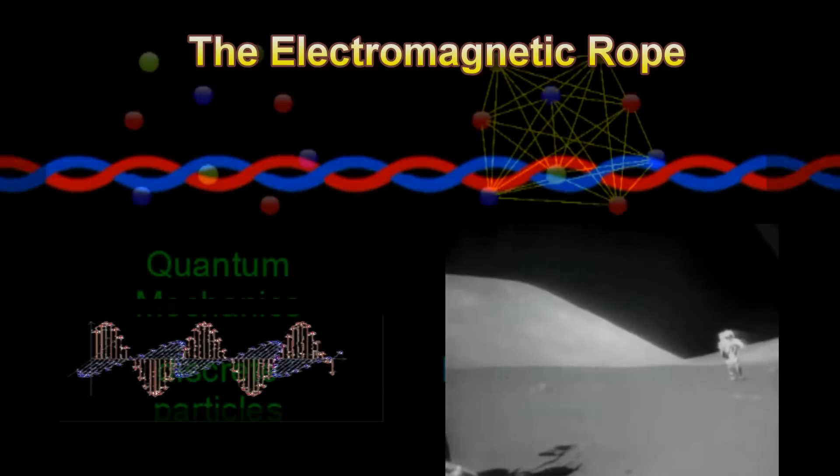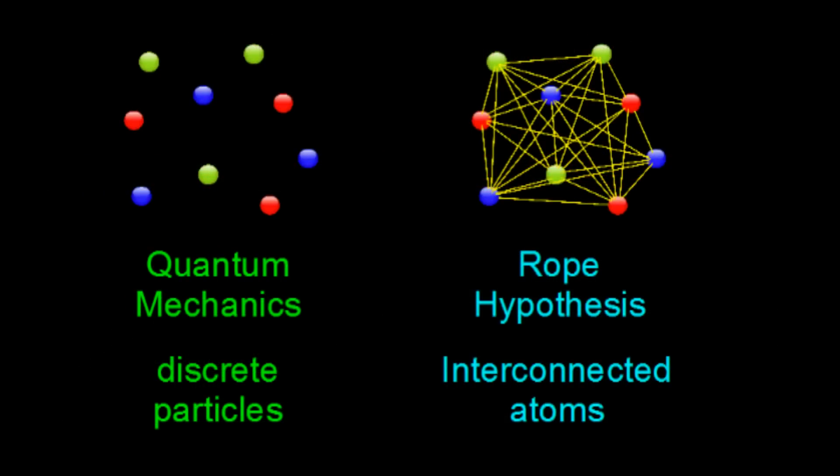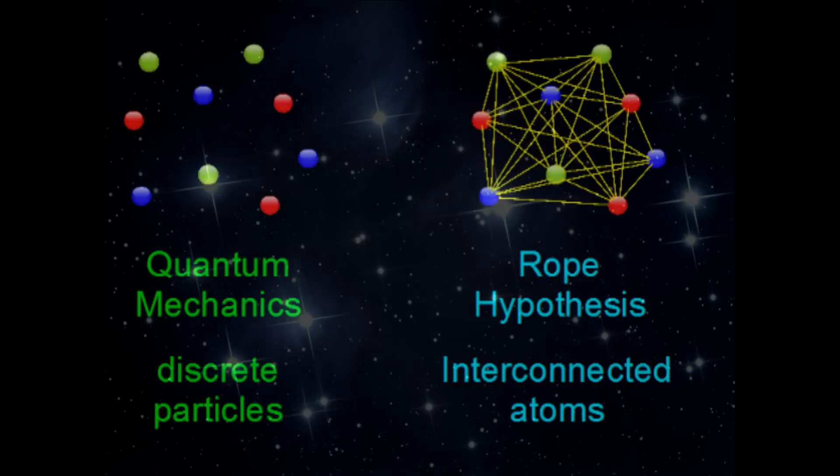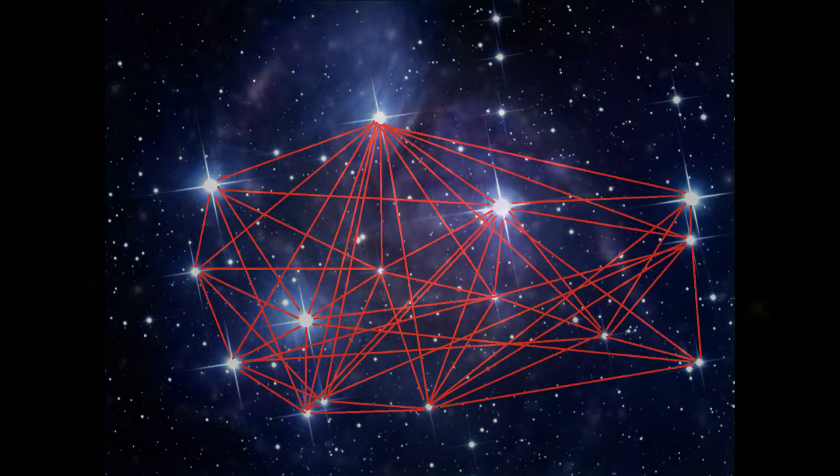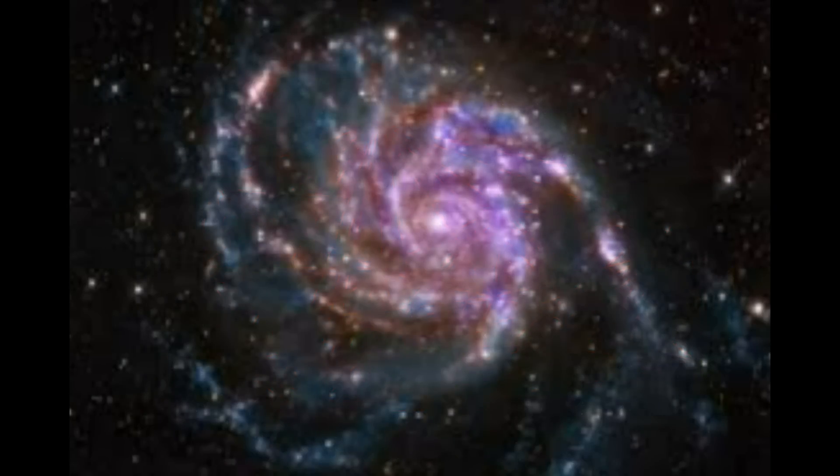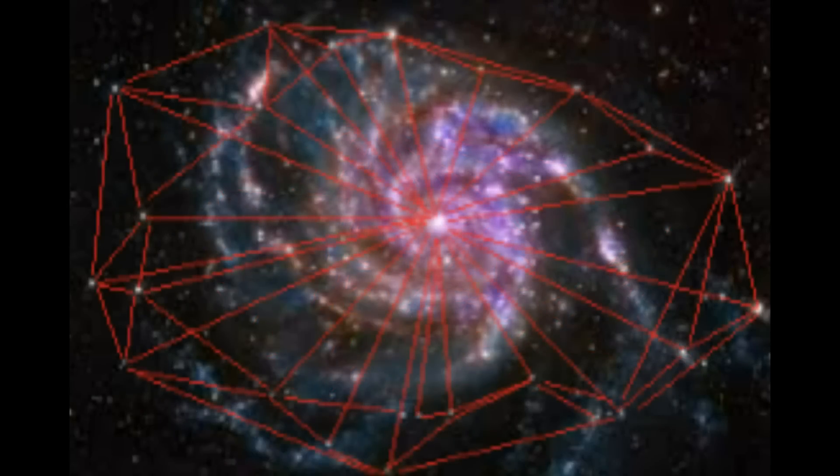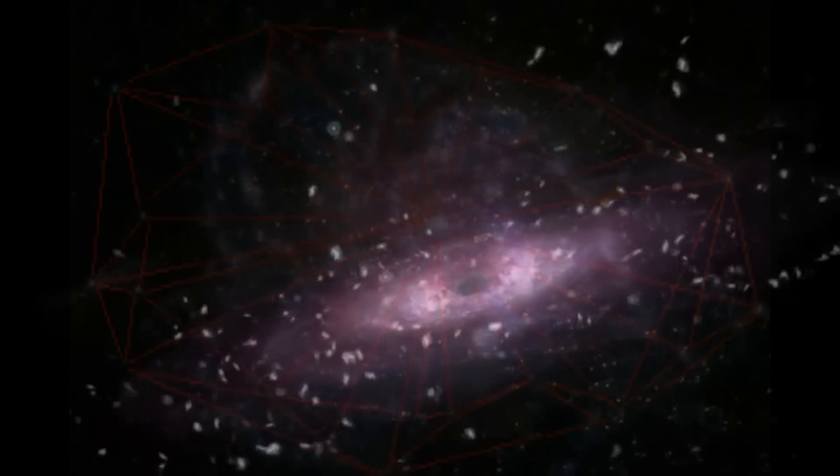If every atom is connected to all others, then every star is physically bound to all others as well. Each star is also bound to the gases, planets, and other celestial objects between them. The entire network of interconnected matter contributes to the integrity of the galaxy. This is the reason a galaxy does not break apart when it rotates.